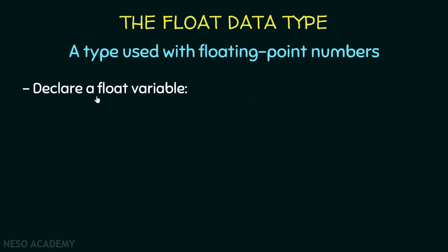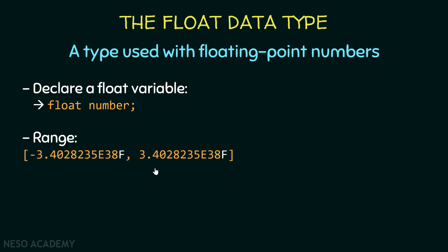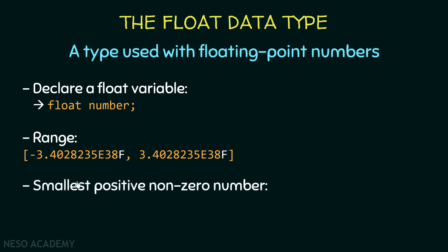Now let's talk about the float data type. It is also a type used with floating point numbers. To declare a float variable we use the float keyword. Looking at the range of values, the numbers in this interval can be stored in a float variable. Notice I'm using the letter 'f' here — every floating point number in Java is considered a double, and to tell Java it is a float we use the letter 'f'.